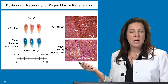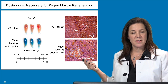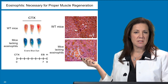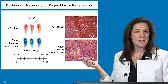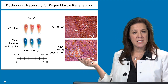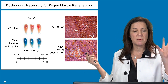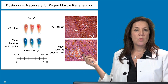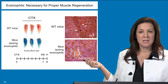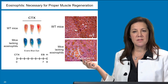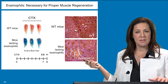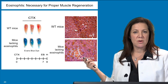A study by Heredia et al. used mice that lacked eosinophils. Comparing wild-type mice to eosinophil-deficient mice after cardiotoxin-induced damage, they assessed Evans blue dye uptake and overall muscle repair. The muscles from eosinophil-deficient animals remained blue, indicating ongoing damage, whereas wild-type mice completely repaired with very little blue present. H&E cross-sections confirmed areas of poor repair in the eosinophil-deficient mice, demonstrating that eosinophils and IL-4 are very important for muscle repair.